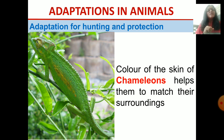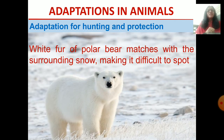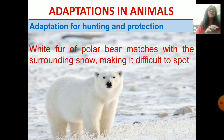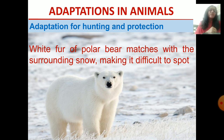Chameleons also have the ability to change the color of their skin. If it goes on the ground, it can change to brown or the color of the soil, and that also helps it to camouflage. Another example is the polar bear — its white fur matches with the surrounding snow. White fur and snow are both white, so it camouflages with its surroundings, making it difficult to spot the polar bear.